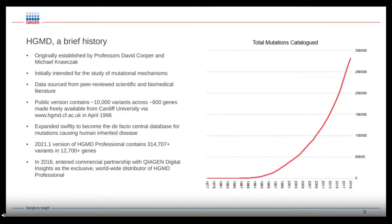To give you a brief history of the HGMD database, it was originally established by professors David Cooper and Michael Krawczak, based at Cardiff University. Initially it was intended for the study of mutational mechanisms, and data was sourced from a range of peer-reviewed scientific and biomedical journals. The original public version contained about 10,000 variants across 600 genes, and has been freely available from Cardiff University since 1996.